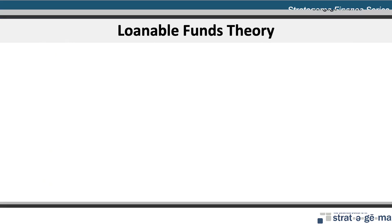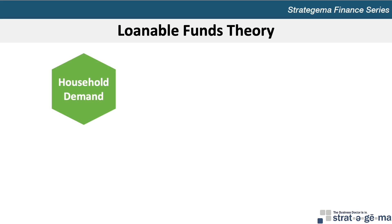Let's begin with Loanable Funds Theory, which suggests that the market interest rate is determined by factors controlling the supply and demand for loanable funds. Households commonly demand loanable funds to finance their housing expenditures, which can also include the purchases of automobiles and household items, resulting in installment debt. As the aggregate level of household incomes rise, so does installment debt, because households are more comfortable financing expenses when their income is relatively high.